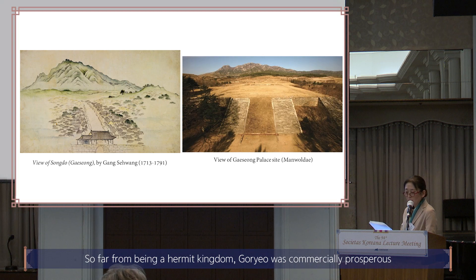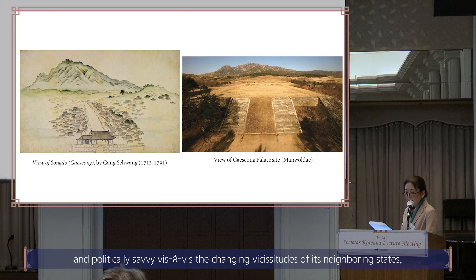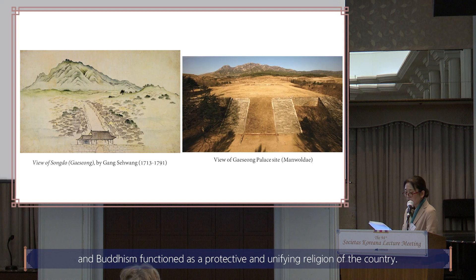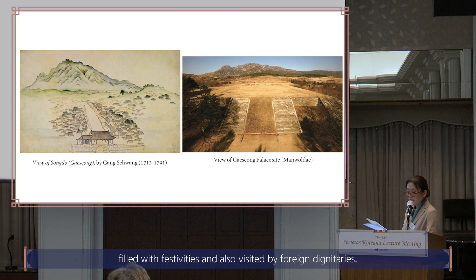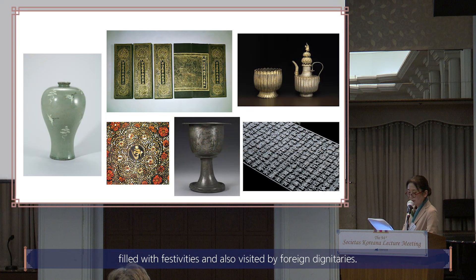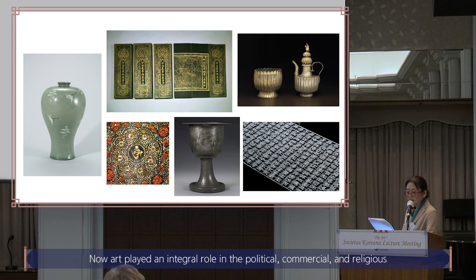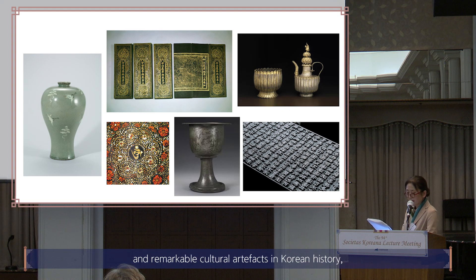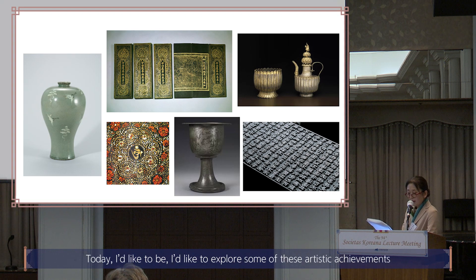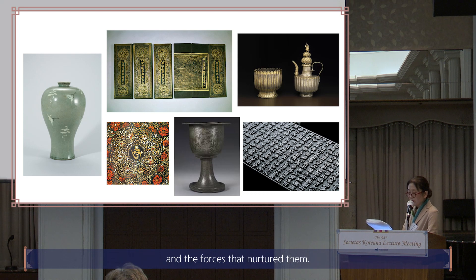Far from being a hermit kingdom, Korea was commercially prosperous and politically savvy vis-à-vis the changing vicissitudes of its neighboring states. Buddhism functioned as a protective and unifying religion of the country. The annually held rituals combined native and Buddhist traditions, filled with festivities, and visited by foreign dignitaries. Art played an integral role in the political, commercial, and religious activities of the dynasty. As a result, Koryo produced some of the most resplendent and remarkable cultural artifacts in Korean history, attaining unparalleled technical virtuosity and finesse. I'd like to explore some of these artistic achievements and the forces that nurtured them.